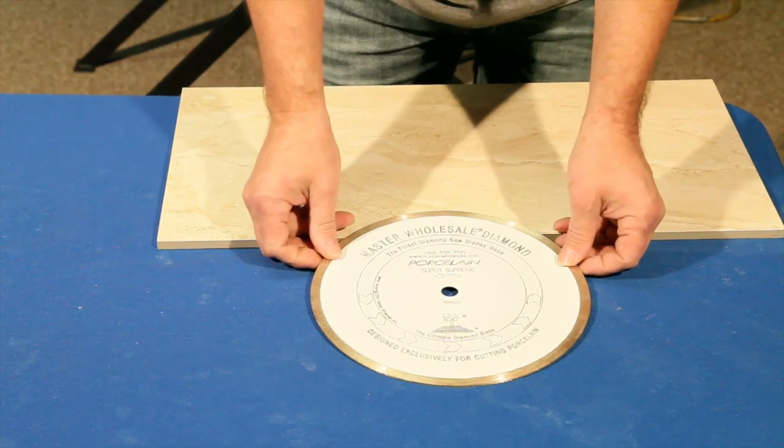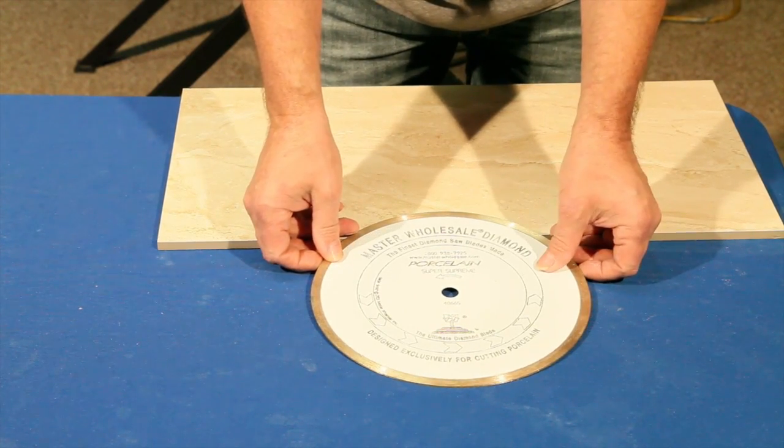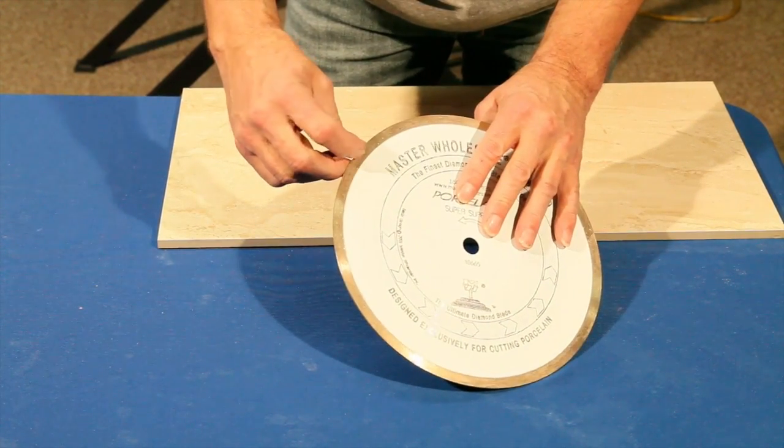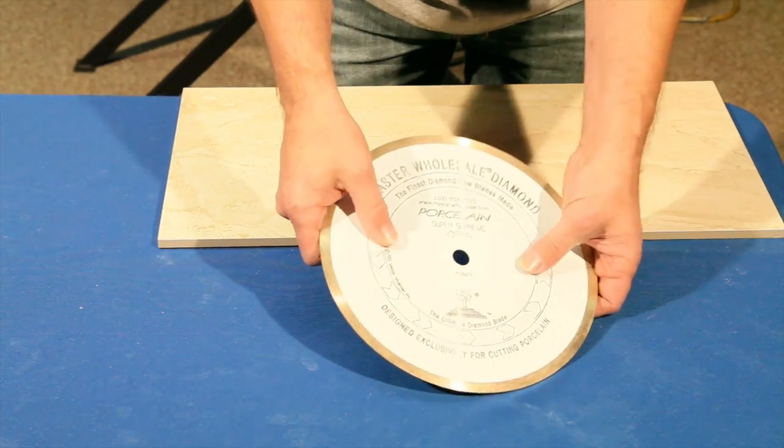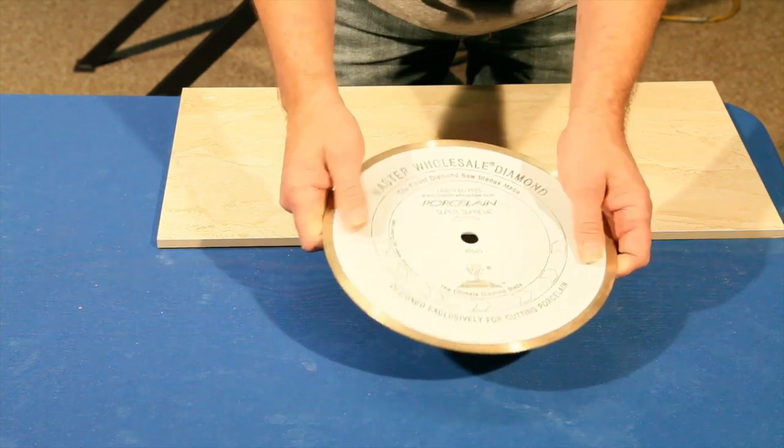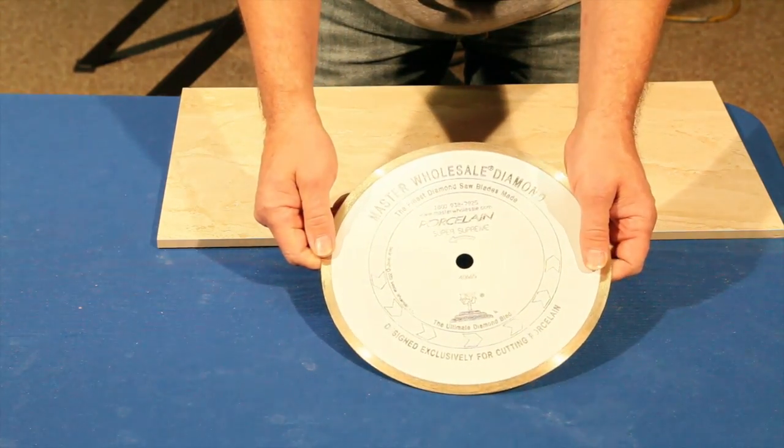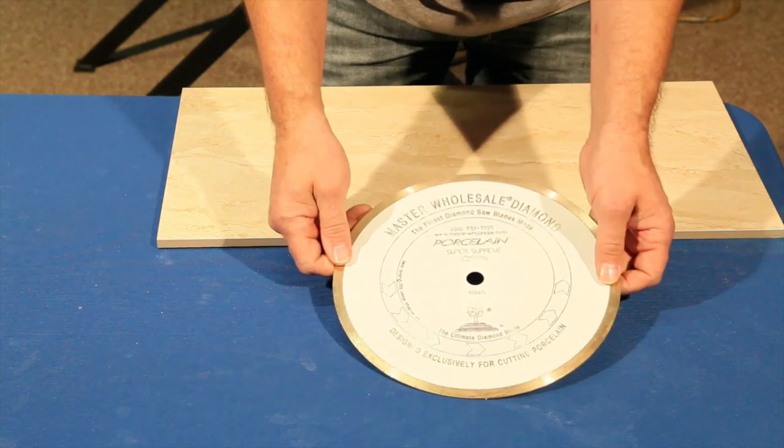Today we're going to talk about porcelain blades. Some of the things we look at is the height of the diamond. The more diamond you have, the longer the blades can last, how thick the core is and how much flex there is in the blade, and then we're going to put these blades on the saw and cut and see which one does the best job.